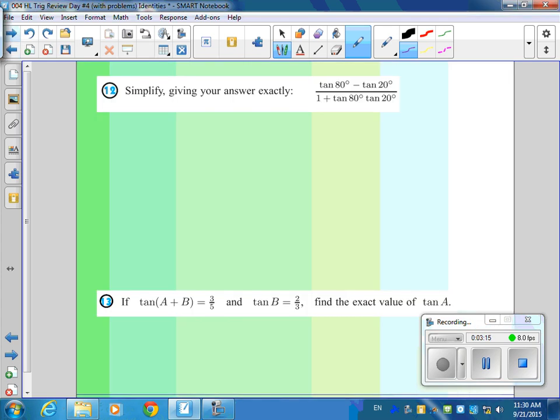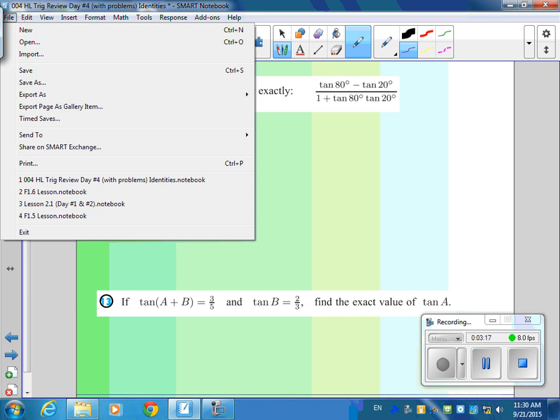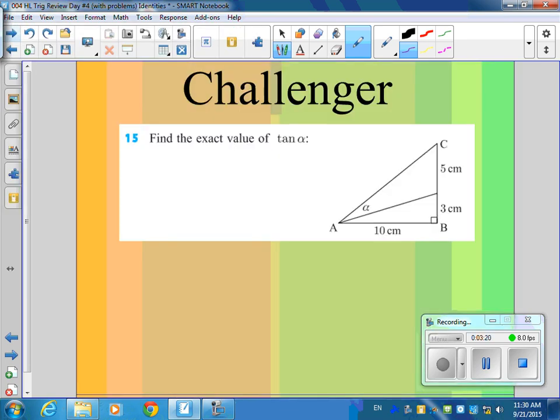12? 12 okay? How about the challenger? Can we do the challenger? The challenger. It says, find the tangent of alpha. I'd like - let's make up something called beta. Let's make up something called beta. What's the tangent of beta equal to using that right triangle?